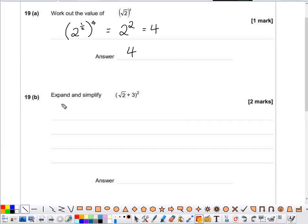Question 19b. Expand and simplify the square root of 2, add 3, all squared.